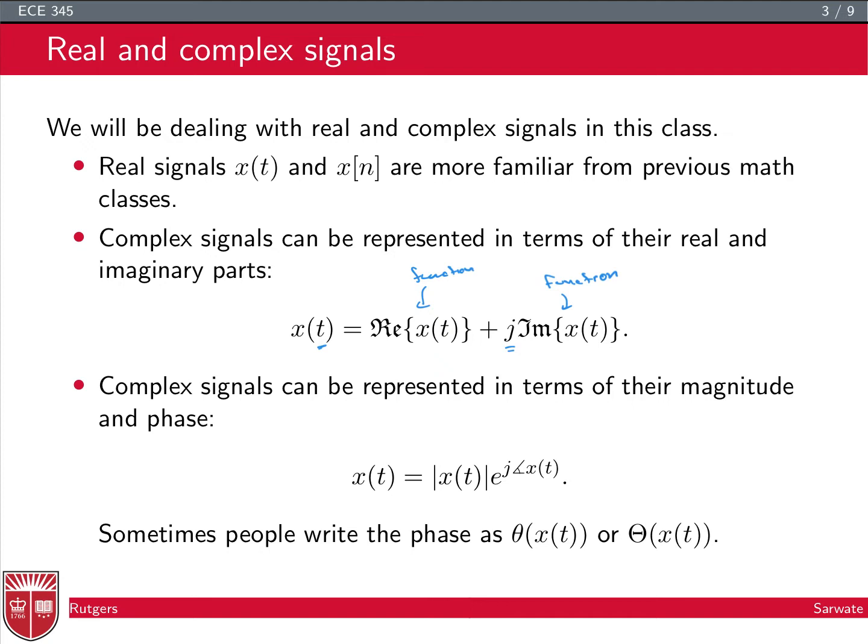Complex signals can also be represented in terms of magnitude and phase. So this magnitude here, magnitude of x(t), it's not absolute value because it's a complex number. This is the square root of x(t) times its conjugate, x star of t. So that's just the value of the signal at t and the conjugate of the value of the signal at time t, and then we multiply the two and take the square root. We can also write it in terms of the real part of x(t) squared plus the imaginary part, x(t) squared.